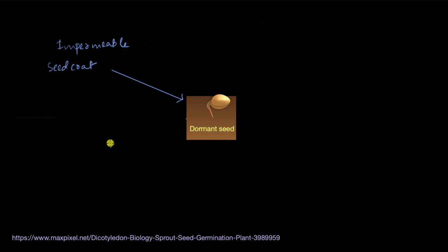So that seed coat which is impermeable will not permit the germination of the seed. So this is one reason why a seed can be dormant.